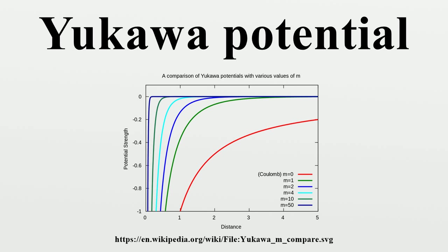The Feynman rules for each vertex associate a factor of g with the amplitude. Since this diagram has two vertices, the total amplitude will have a factor of g squared. The line in the middle connecting the two fermion lines represents the exchange of a meson.